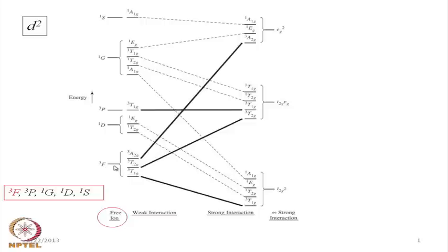That means the 7-fold degeneracy goes to a 1-fold degeneracy in case of the 1S system. When we put that particular ion — the vanadium trichloride or any other vanadium compound in the +3 state — they will basically undergo splitting in an octahedral crystal field. So the 3F term, which is the ground state labeled in red, will undergo splitting into 3T1g, 3T2g, and 3A2g. These two are having 3-fold orbital degeneracy and this has 1-fold orbital degeneracy, apart from their corresponding 3-fold spin degeneracy in all these cases.